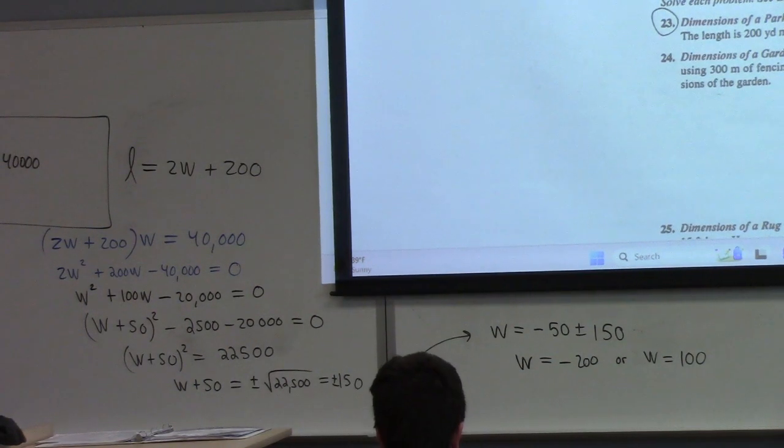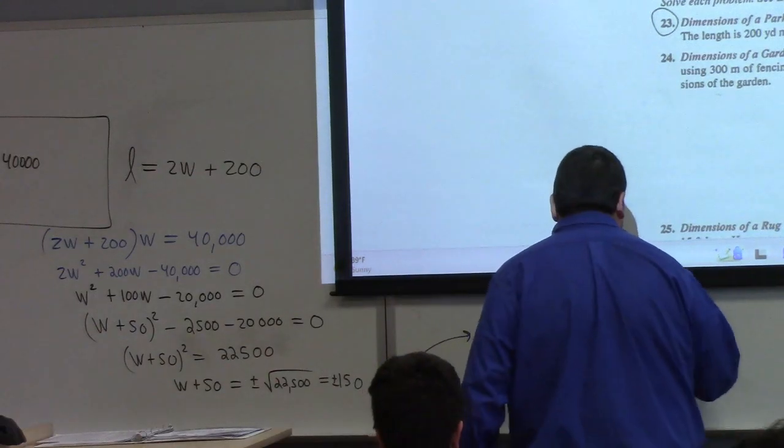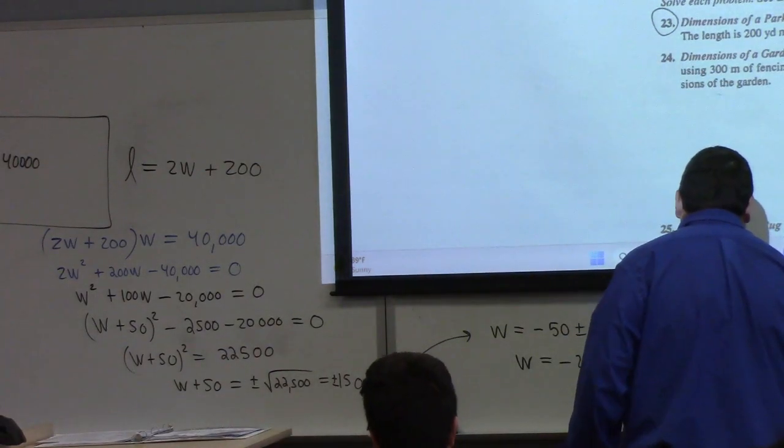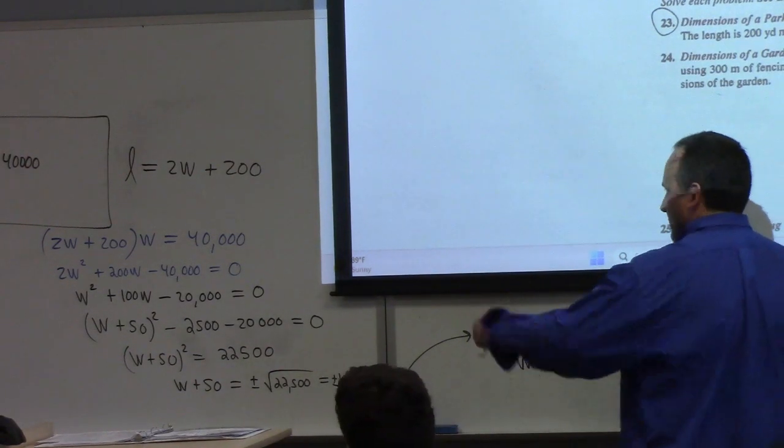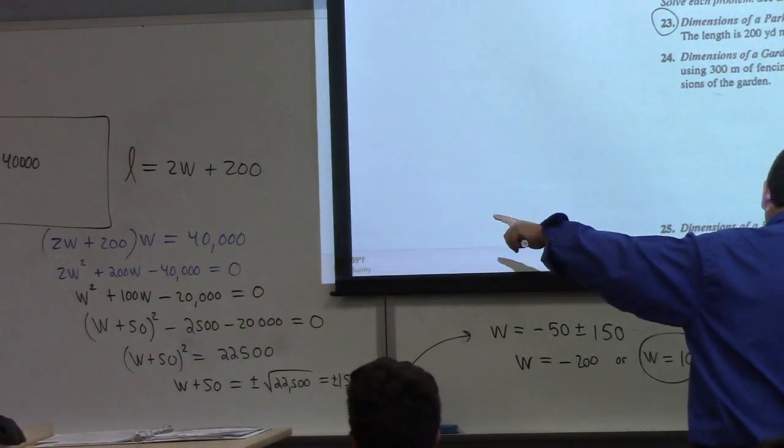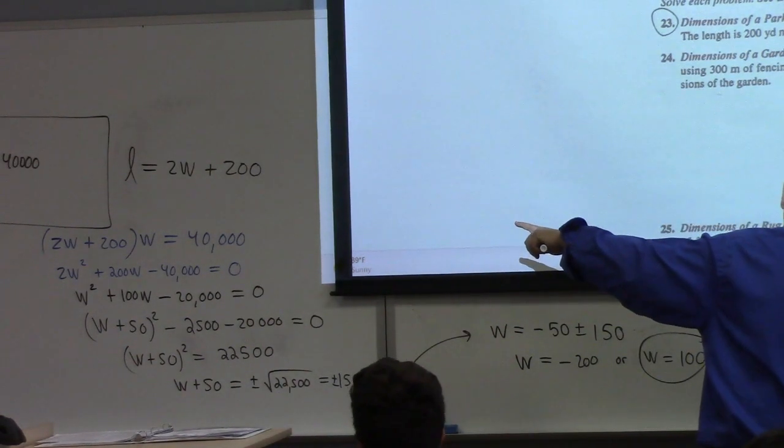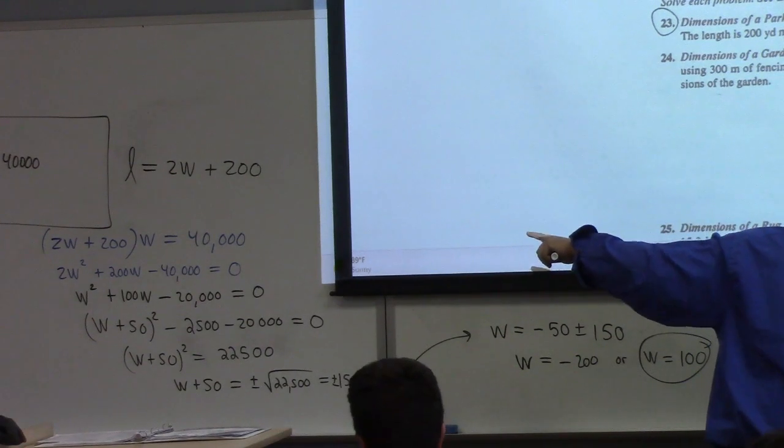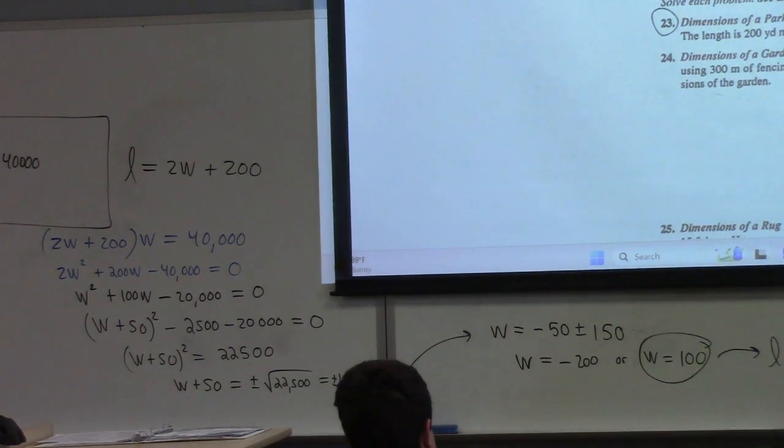Which one of these is a physically reasonable answer? The 100, right? We definitely can't have negative width. So if we have 100 for the width, then what's that tell me the length is? Two times the width, right? 400. That's great. Exactly. So the dimensions are 100 yards by 400 yards.